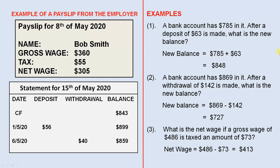Here is an example of a pay slip from an employer. This example shows a pay slip for the 8th of May 2020. The name of the person is Bob Smith. The gross wage is $360. The tax is $55, so the net wage is $360 take away $55, which is $305. And that's the amount that you take home.